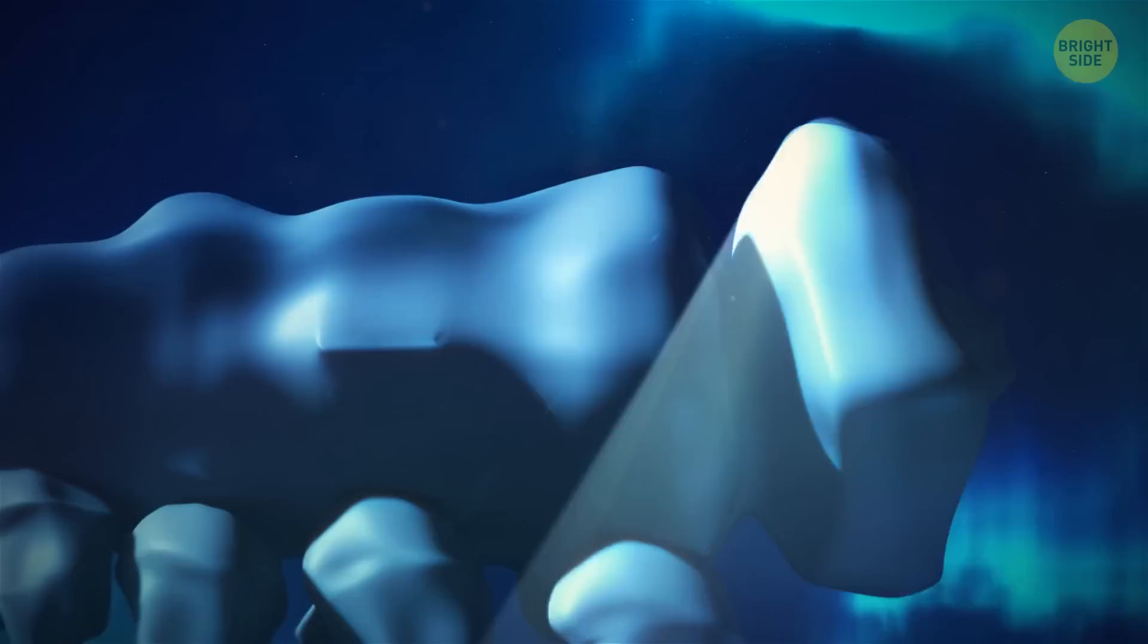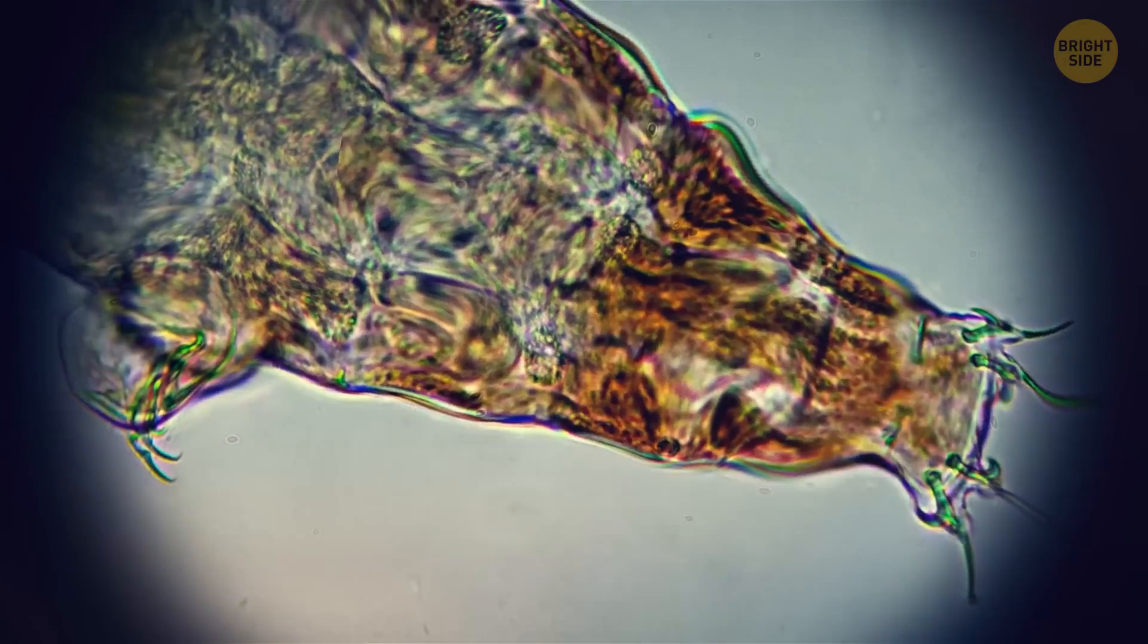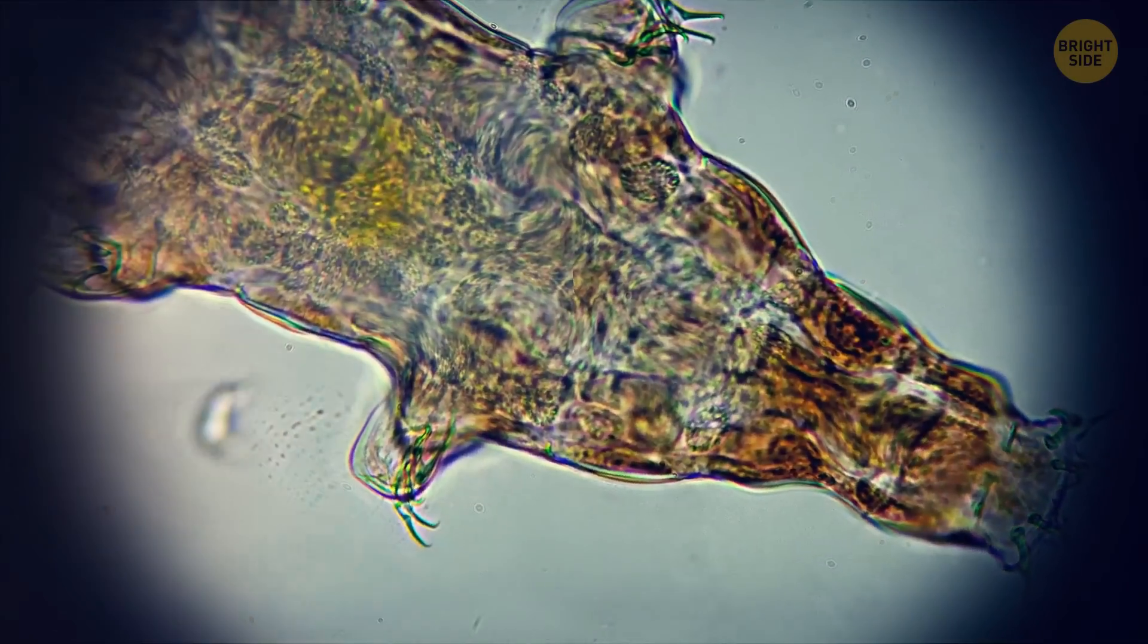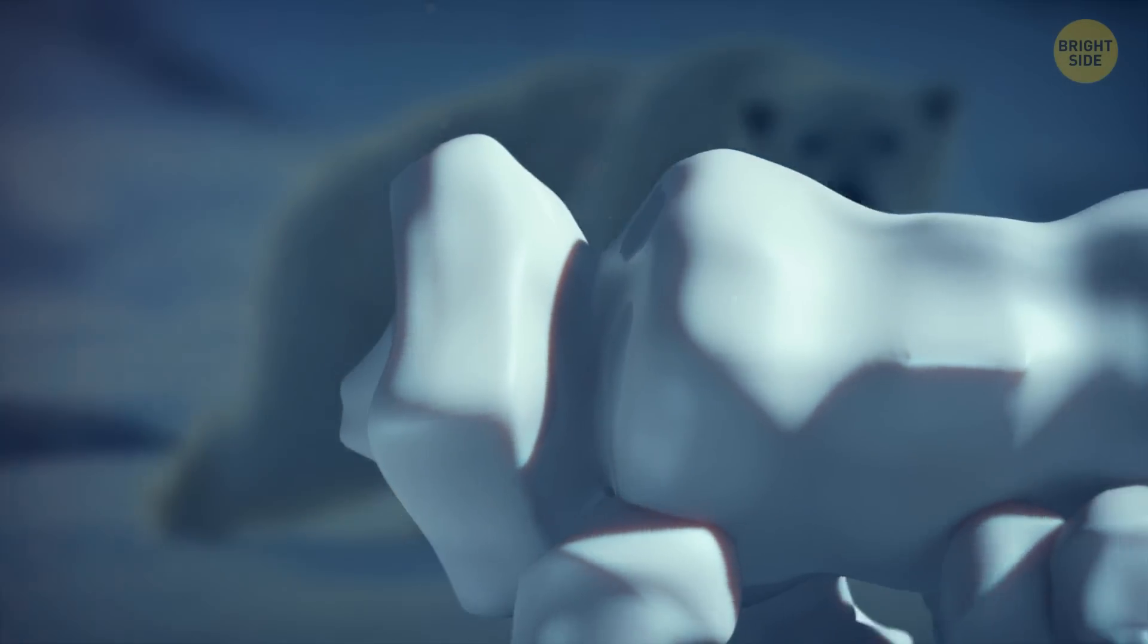The main threat would be the giant tardigrades, sluggishly dragging themselves around. Under a microscope, they look kind of cute, but imagine them the size of a polar bear. Still want something like this in your backyard?